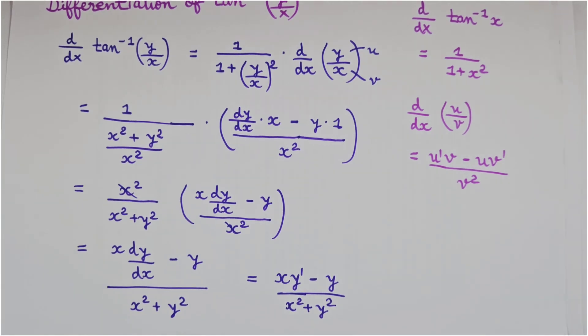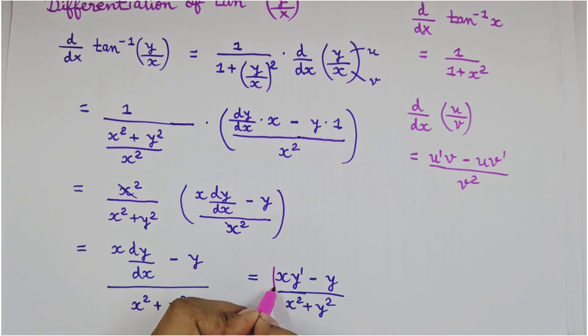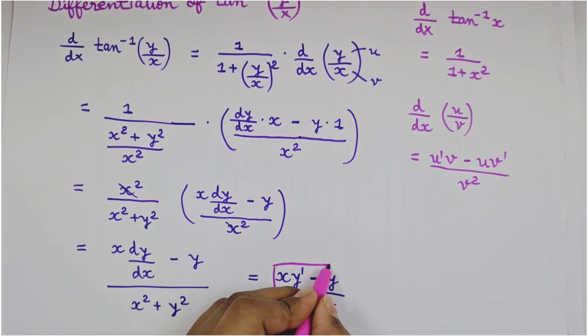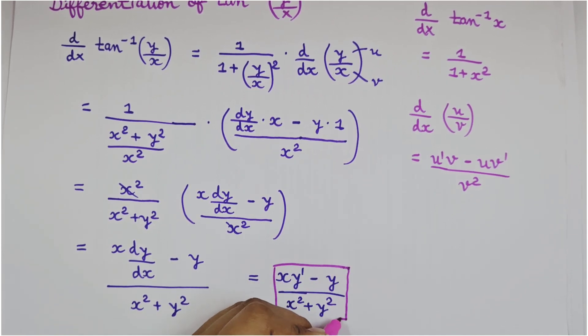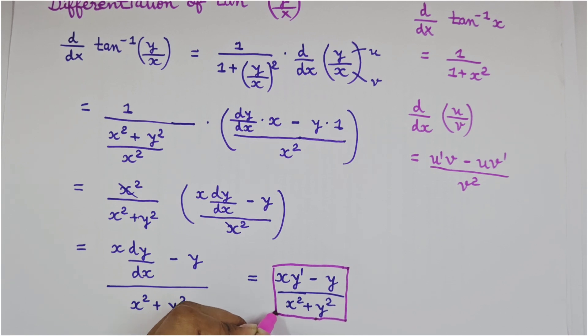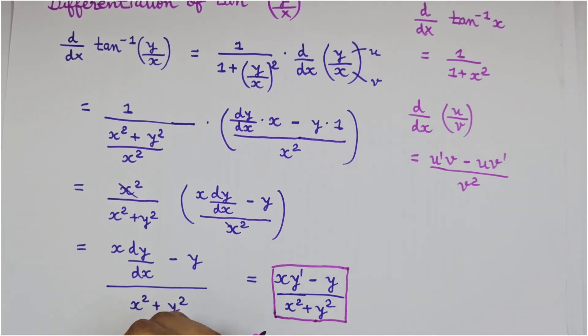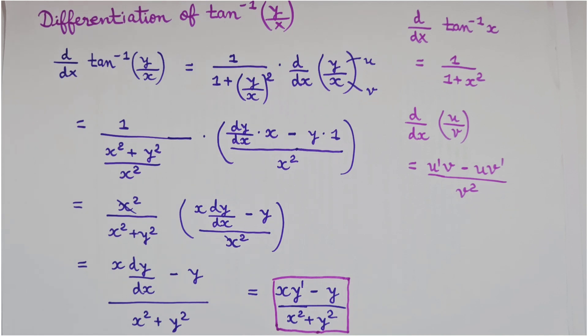So this is how we can differentiate tan inverse y by x. And on differentiating, we get the answer as x y dash minus y upon x square plus y square. Thank you.